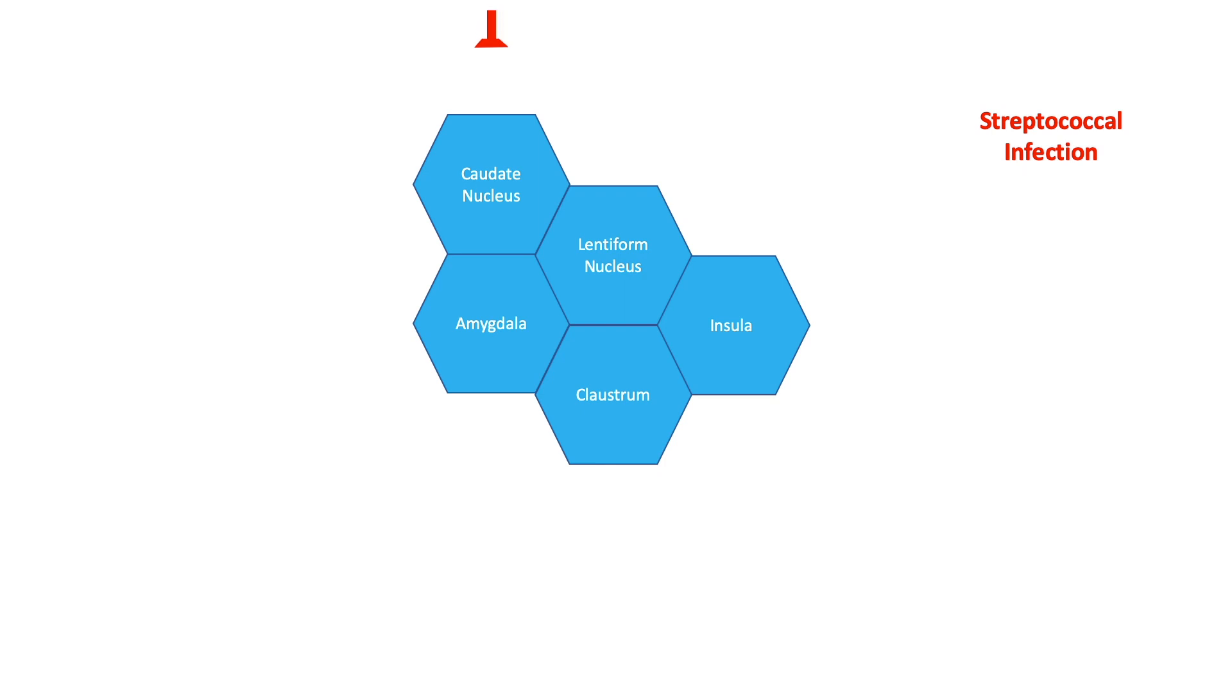In PANDAS, what happens is that we get a streptococcal infection which then results in the production of antibodies that unfortunately go on and stimulate the brain. This stimulation causes inflammation, and that inflammation spreads throughout the brain, resulting in symptoms including tics, obsessive-compulsive behaviors, and other features.